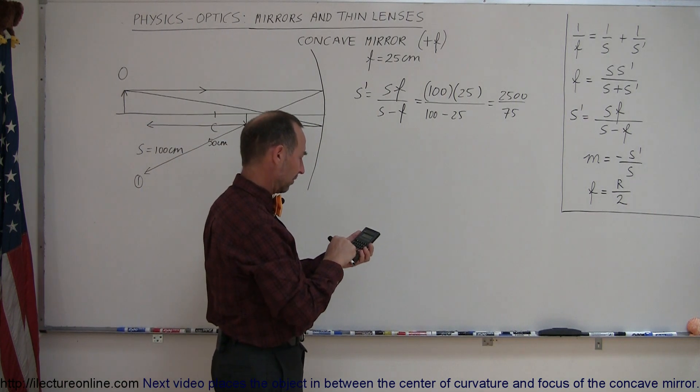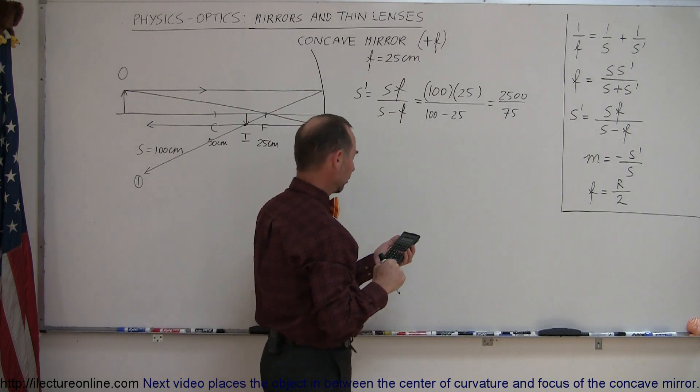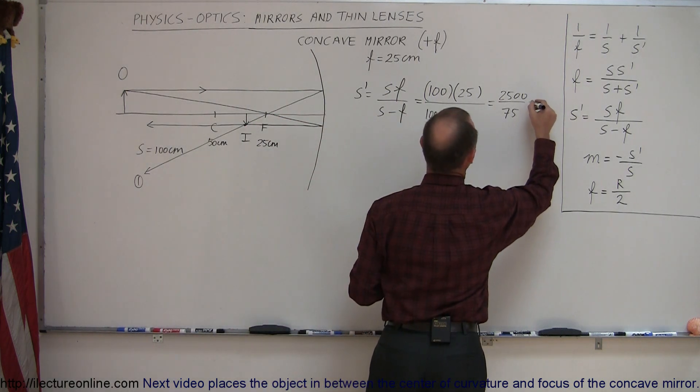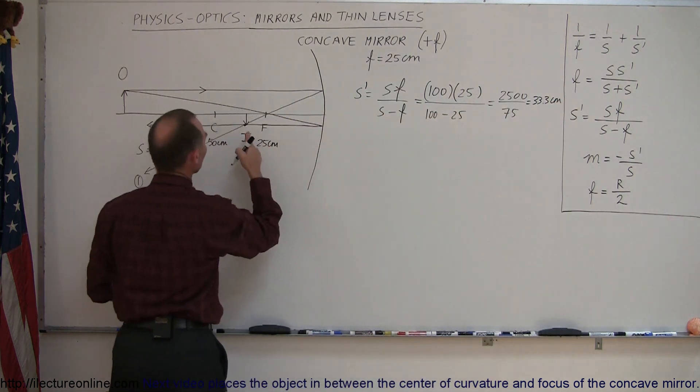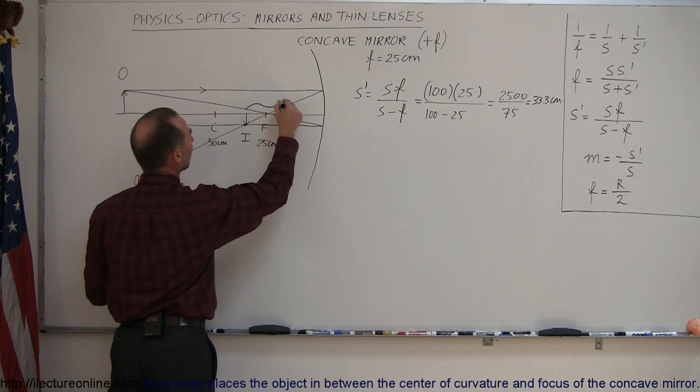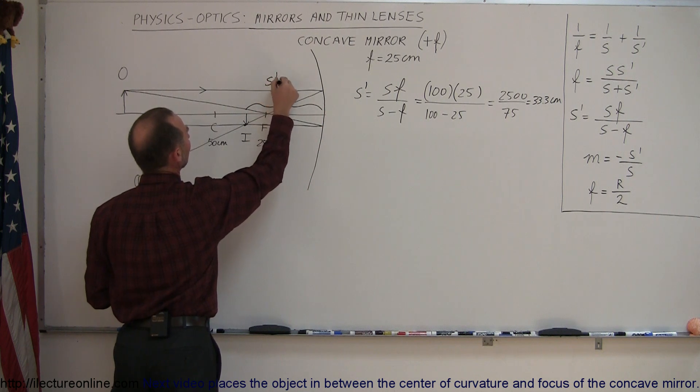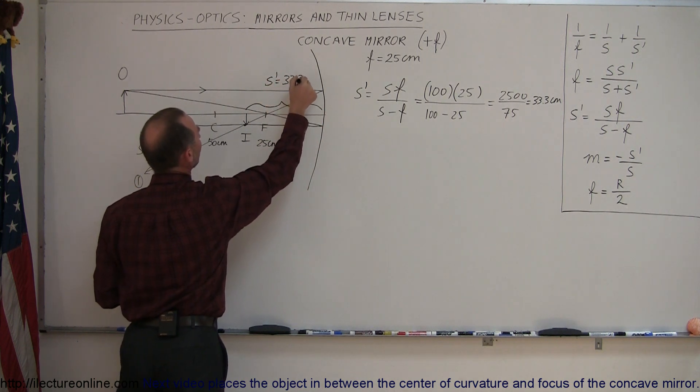So 2,500 divided by 75 is 33.3. So that would be 33.3 centimeters. So the first thing we did is find the distance to the image. So distance is right here. This is your S' that's equal to 33.3 centimeters.